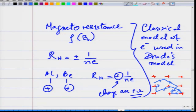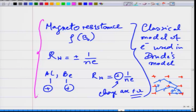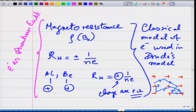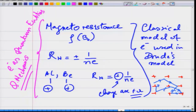None of the phenomena discussed — magnetoresistance, the change in sign of Hall carriers, or the behavior of semiconductors like silicon, germanium, and gallium arsenide where the Hall coefficient changes sign — can be explained by a classical picture of the electron. You have no alternative but to treat electrons as quantum entities and use quantum mechanics to understand even these basic effects.